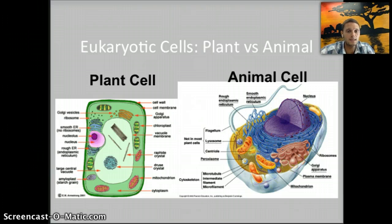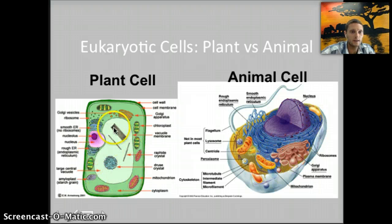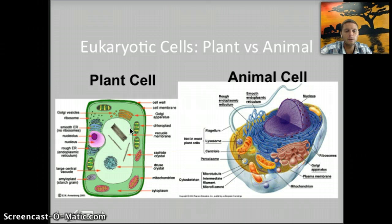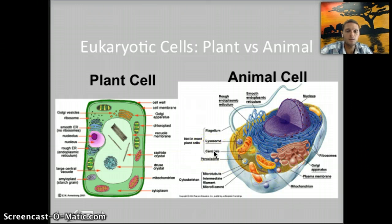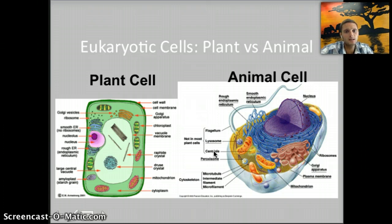Another major difference is that plants have a central vacuole, which you can actually see quite well in this image. This central vacuole can be used to store water, but it can also store food or waste. Plants almost always have a large central vacuole, though they can also have other small vacuoles. Animal cells do have vacuoles, but they're much smaller and there's no single pronounced large central vacuole. Something that animal cells have that plant cells generally do not is a centriole, which helps with cell division. Lysosomes are another organelle usually found in animal cells, and only sometimes in plant cells.